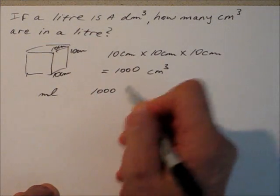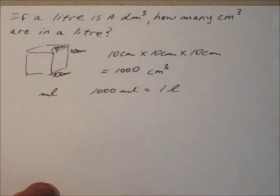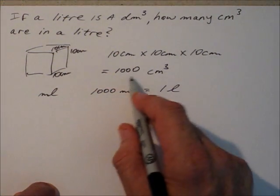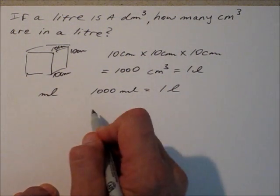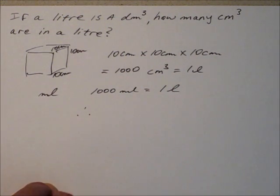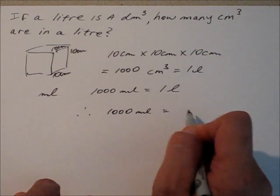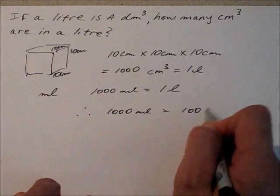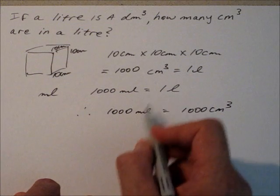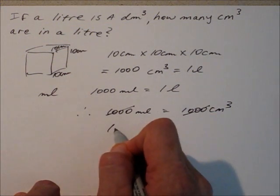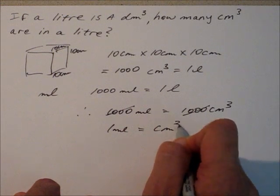So I can write one thousand mils equals one litre. Well, doesn't one thousand cubic centimeters equal one litre? So therefore, I can also say that one thousand mils equals one thousand cubic centimeters. In other words, one mil is actually a cubic centimeter.